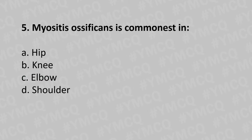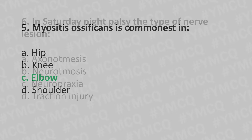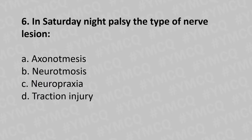Moving to our fifth question: myositis ossificans is most common in — option A hip, option B knee, option C elbow, option D shoulder. And the answer is option C elbow.